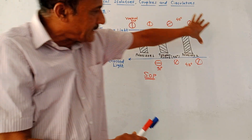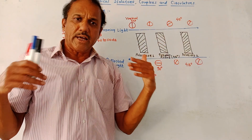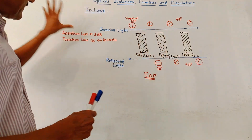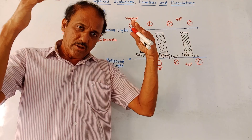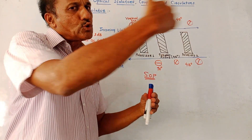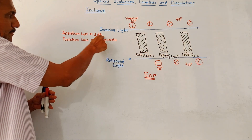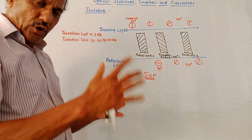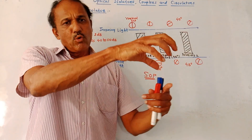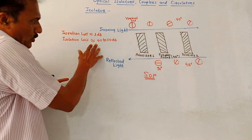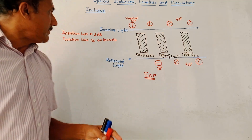At one end we provide a light source and at the other end we place the detector. This is how an optical isolator works. There are two important parameters: first is insertion loss — this is the loss in the light ray when traveling from source to detector, that is in the forward direction. Ideally it should be 0; a typical value is around 1 dB. Second is isolation loss — this is the loss in the reflected light ray moving back towards the light source. This loss must be very high; a typical value is around 40 to 50 decibels.